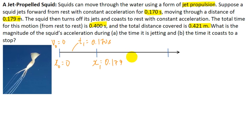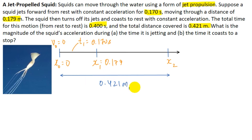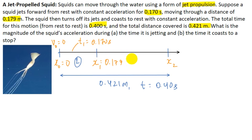The total distance covered is 0.421 meters and total time taken is 0.40 seconds. Let me show everything on the figure. The initial position X naught equals 0, and X1 is 0.179 meters reached after t1 = 0.170 seconds starting from rest. The squid then turns off its jet and comes to rest at X2. There are two parts: part A finds acceleration during jetting, part B finds deceleration after. Let this forward direction be our positive x direction.